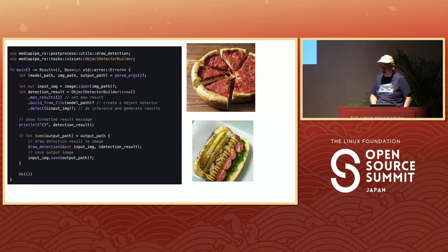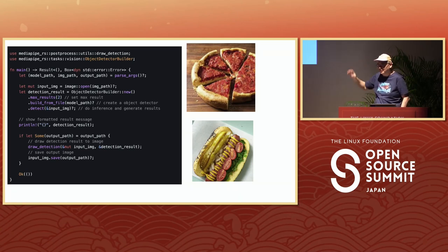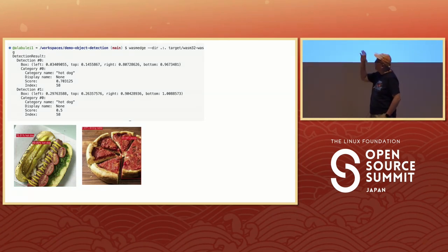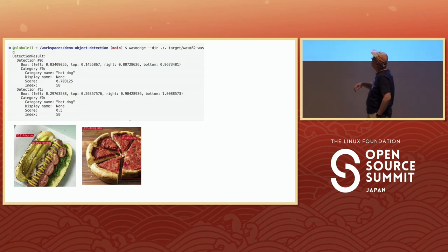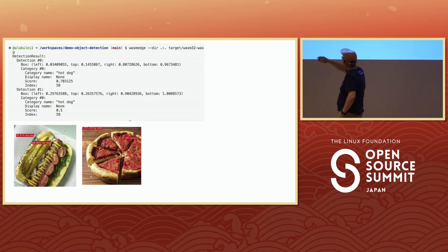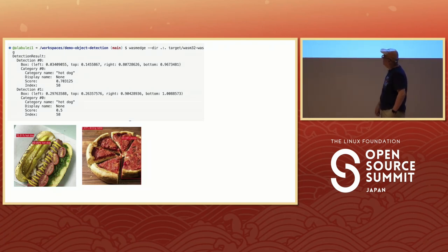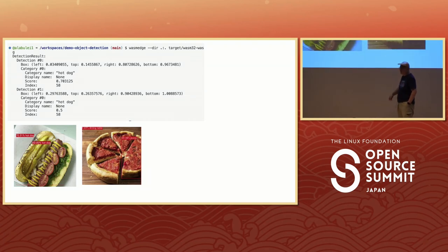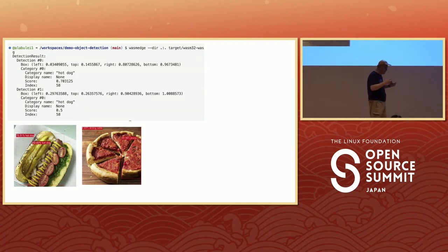If you run this, it will print out the detection result in formatted text. I used a Chicago-style hot dog image at KubeCon Chicago — they put a lot of stuff on the hot dog, which really confused the model. The model thought there were two hot dogs laid on top of each other. That's the strength of why we need open-source private models: this model is Google's MobileNet from their MediaPipe, trained on a standard set of images that doesn't include complex food images or much Japanese food. So for your own specific use case, you want to fine-tune or retrain the model to fit your application.